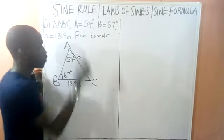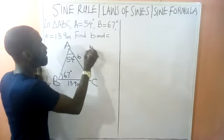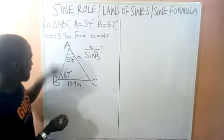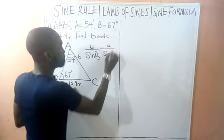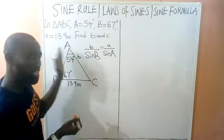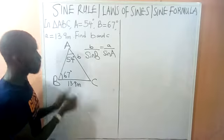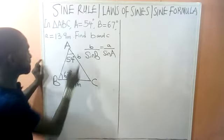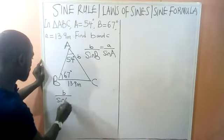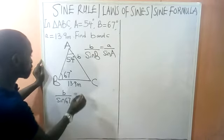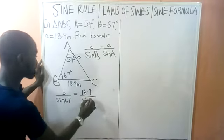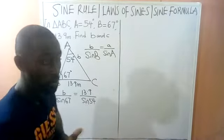So we need to find small b. The sine rule formula is: b over sin B equals a over sin A. It is always advisable to write what you are looking for on the left-hand side. So we have: b over sin 67° equals a over sin A, which gives us: b over sin 67° equals 13.9 over sin 54°.